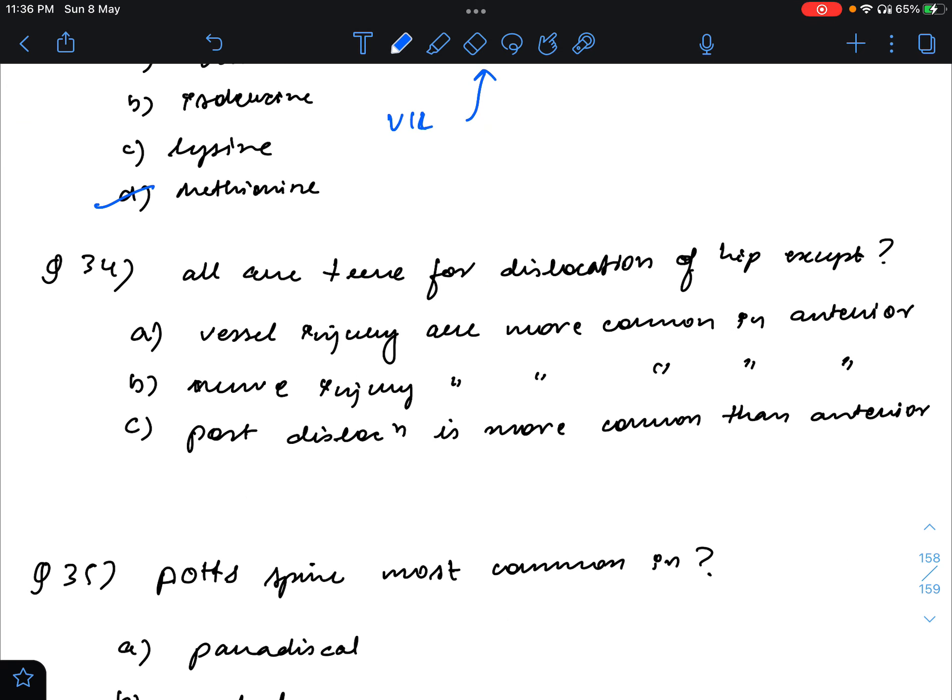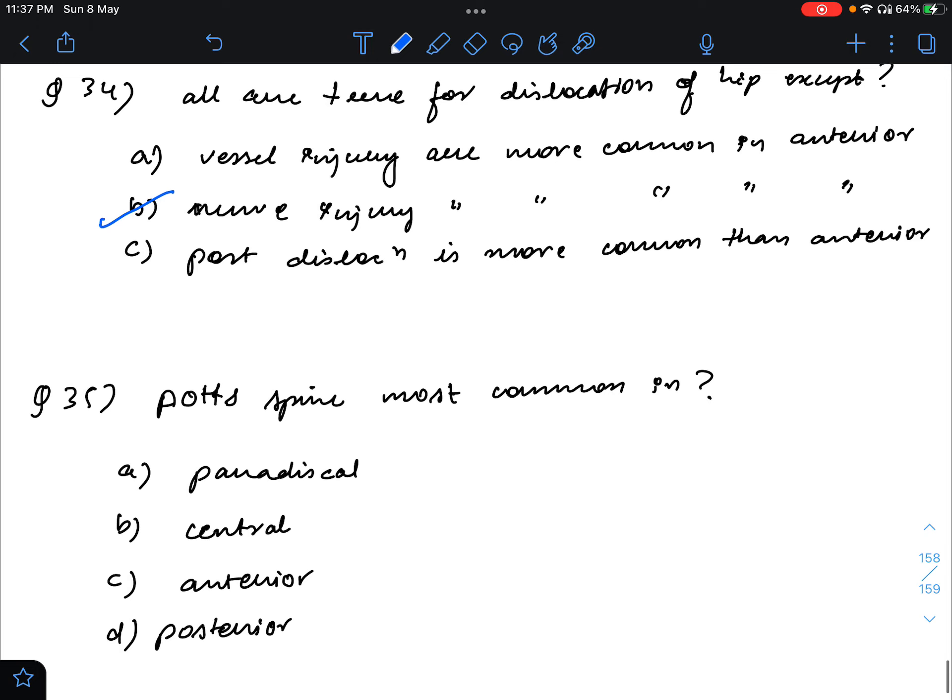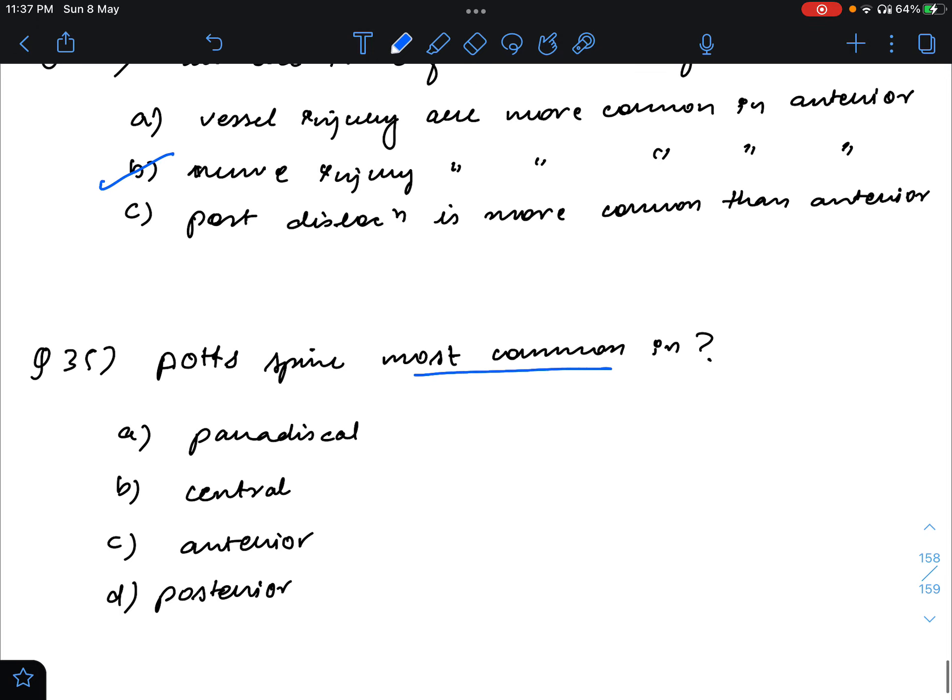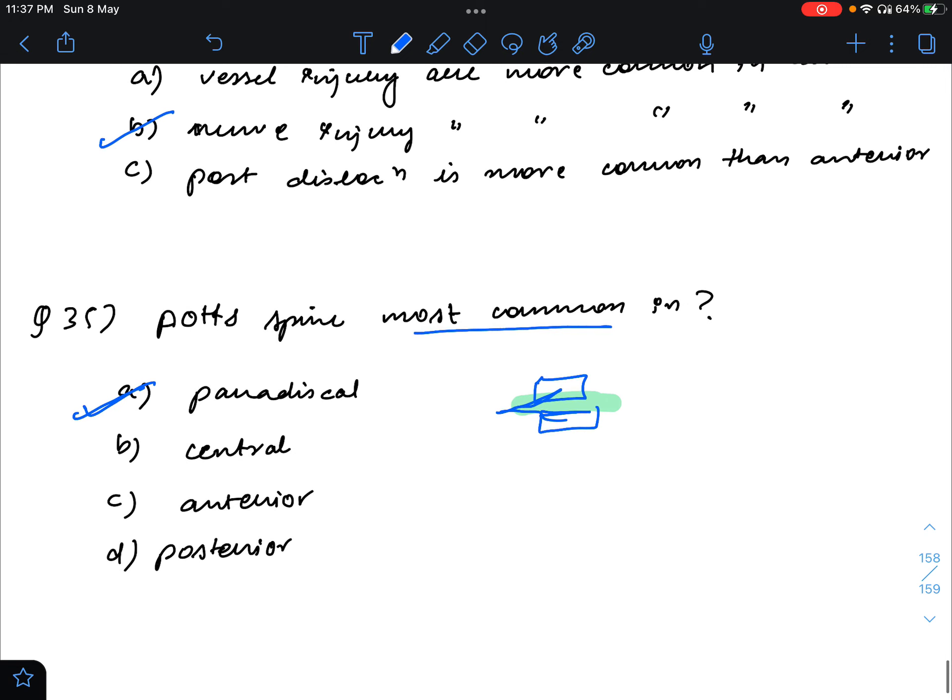Question 34: all are true for dislocation of hip except. The first option, vascular injury are more common with anterior dislocation. This is true because there are femoral vessels on the anterior side. Nerve injury are more common with posterior dislocation, so this is the false statement, because nerve injury is more common with posterior dislocation. And also posterior dislocation is more common than anterior dislocation. The most common for this is posterior dislocation. Between the two iliac bones, there is acetabulum, so when the posterior is involved, it is called posterior dislocation, that is the most common. And anterior is the least common. So posterior dislocation will be the answer for this.